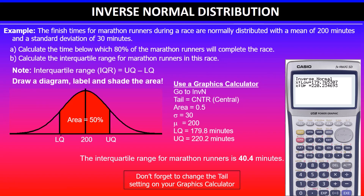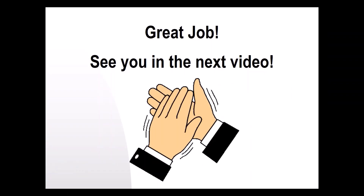I'm using central because it captures the middle 50% and it's easier to get both values at once. Thanks for watching — I'll see you in the next video.